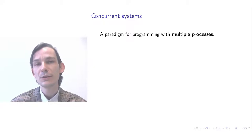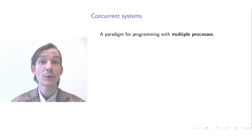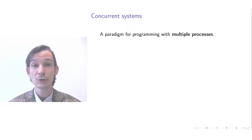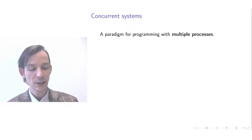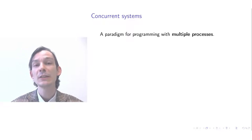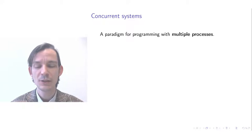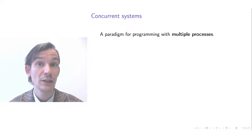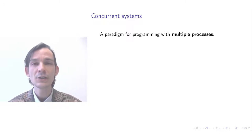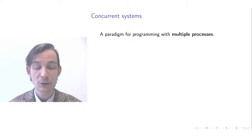Concurrent systems could be seen as a paradigm for programming whenever you have multiple processes. You can think of a process as independently executing a sequence of commands causing effects. It is now interesting that these different processes run independently of each other.